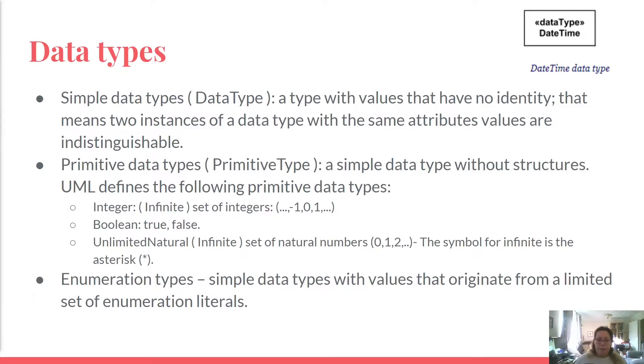A primitive type is a data type which represents atomic data values. That means values that have no parts or structure. That means boolean, integer, decimal, string, etc.